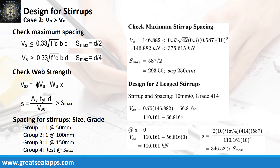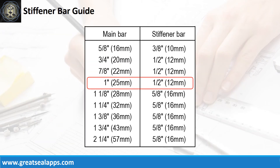The spacing of stirrups is: 1 at 50mm, 1 at 100mm, 1 at 150mm, then rest at 250mm. For 25mm main bars, use 12mm stiffener bars.